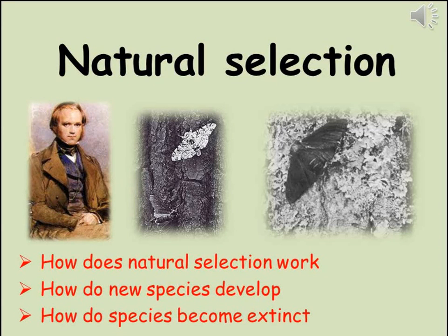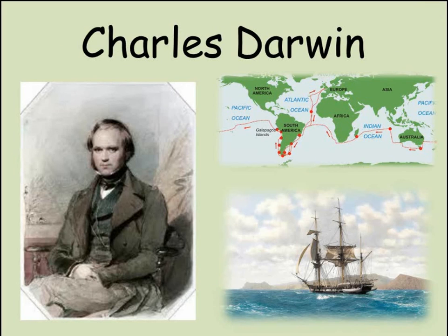Nothing in biology makes sense without understanding natural selection. Darwin's insight gives us a wonderfully simple way of explaining every characteristic for every species. Without understanding natural selection we cannot really explain much about living things — all we're able to do is describe them. The great thing is that for such an important and groundbreaking idea, it really is so simple. This video will explain natural selection, looking at the observations Darwin made and the inferences he drew. It will also look at how new species come into existence and how they cease to exist.